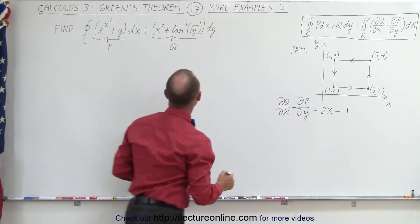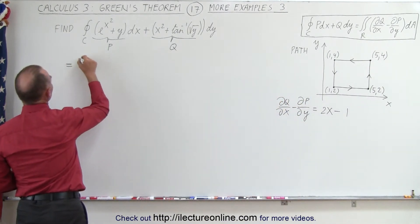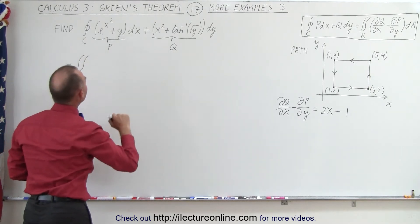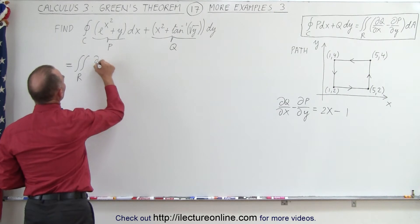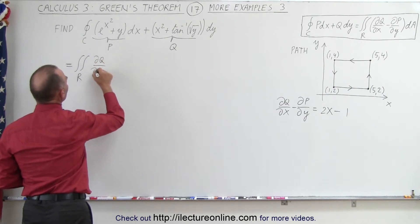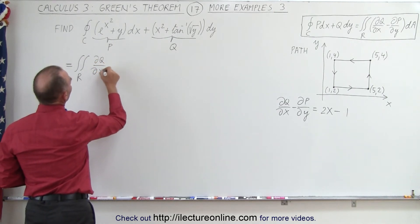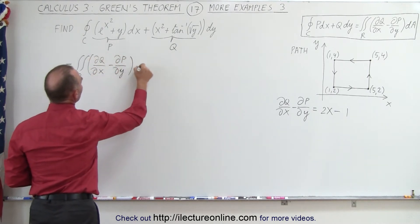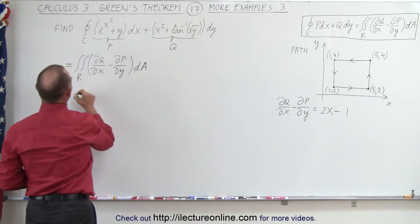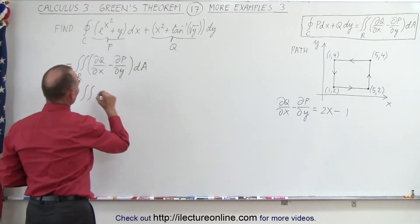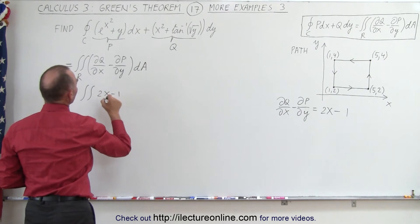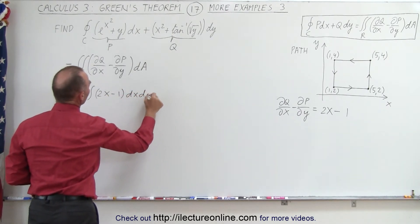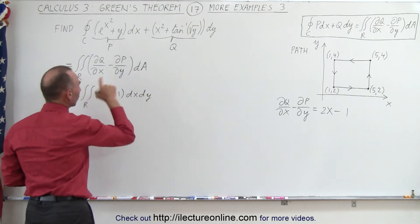That means this can then be solved by taking the double integral over the region enclosed by that path of the partial of Q with respect to x minus the partial of P with respect to y, which we now realize is going to be equal to the double integral of 2x minus 1 times dx dy over the enclosed region.